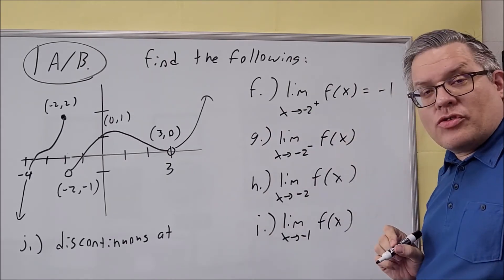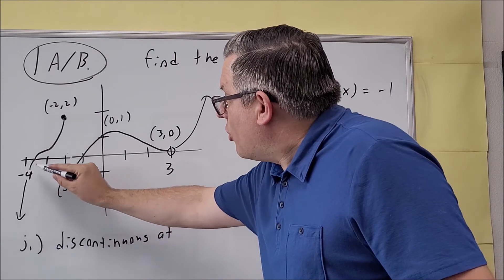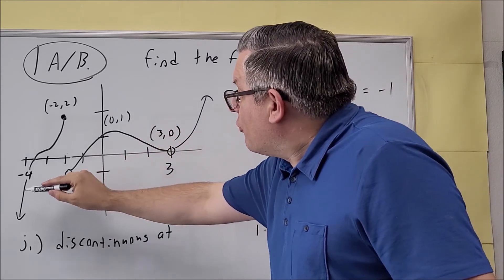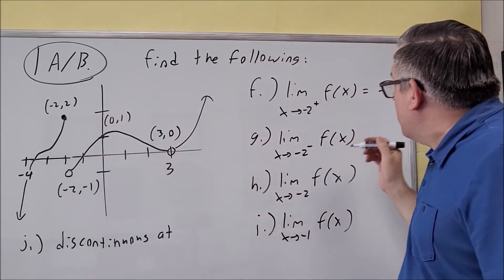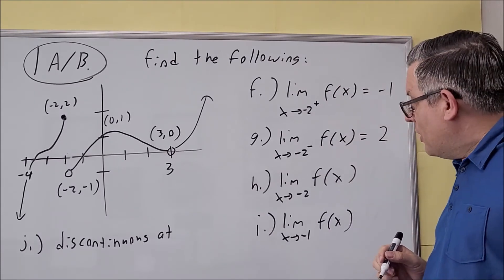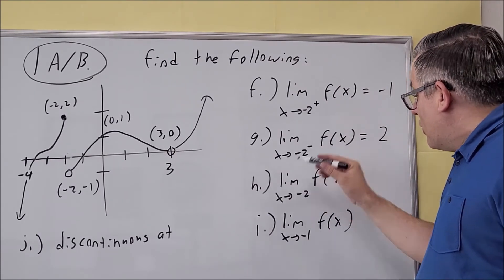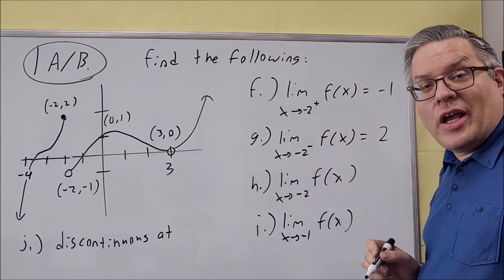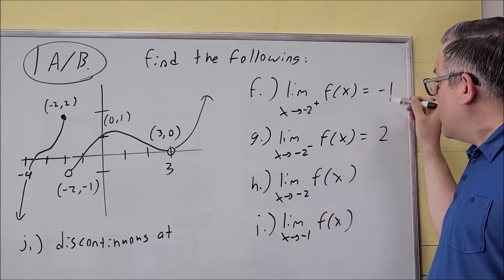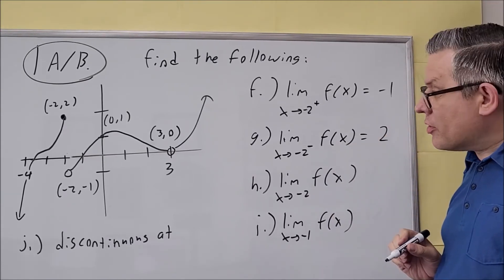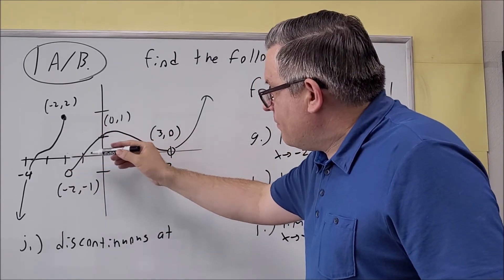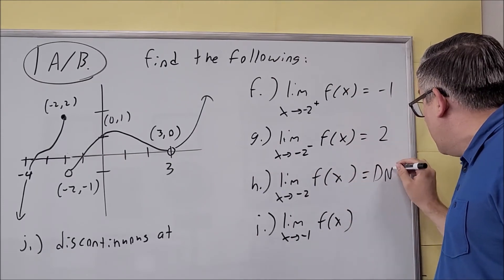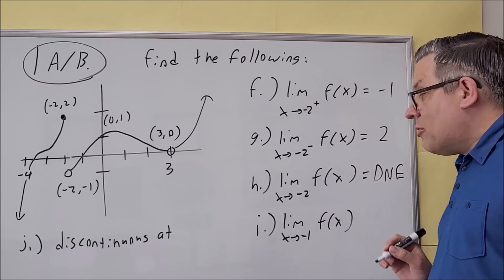Approaching negative two from the left — the negative side — you follow the line all the way up, and the y-value approaches two. For part h, the two-sided limit as x approaches negative two: the left and right limits approach two different numbers, so there's a split. When that happens, the limit does not exist, so the answer is DNE.